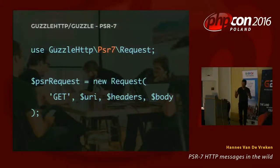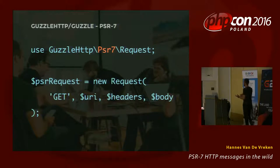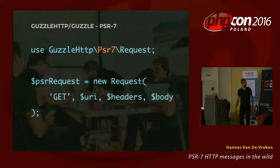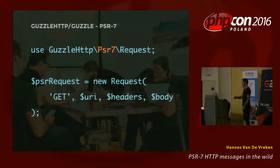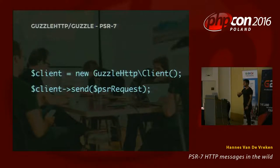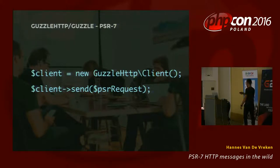You can now new up a request. You cannot new up a request interface directly — you need an implementation. Using guzzlehttp/psr7 Request, you can do: new Request with method, URI, headers, and body. Then you have a new PSR7 request object. You can pass it to a new Guzzle client, and the client's send method will return a PSR7 response object.